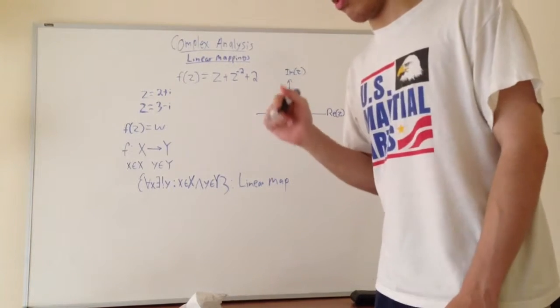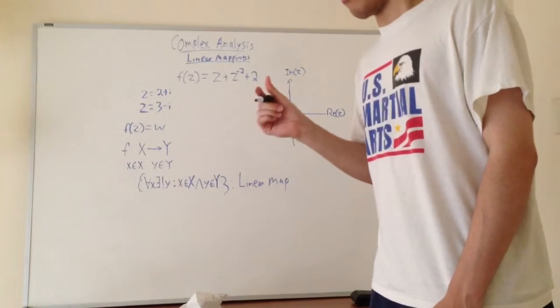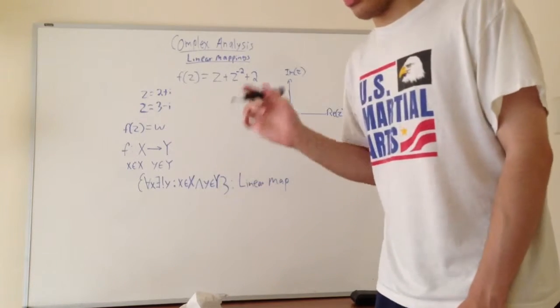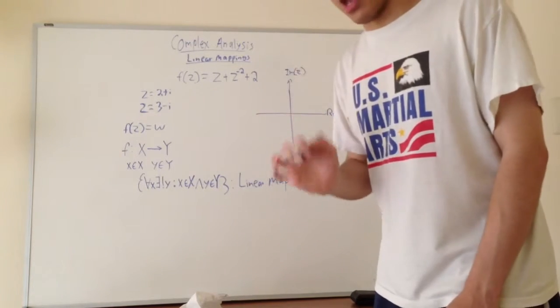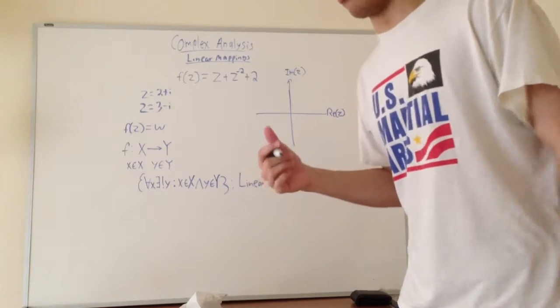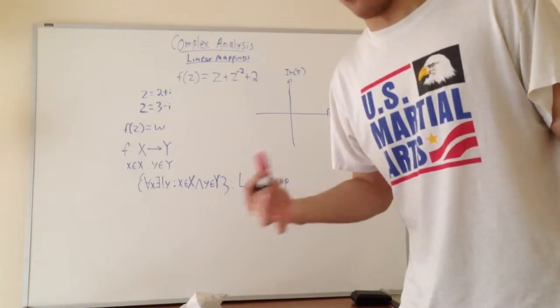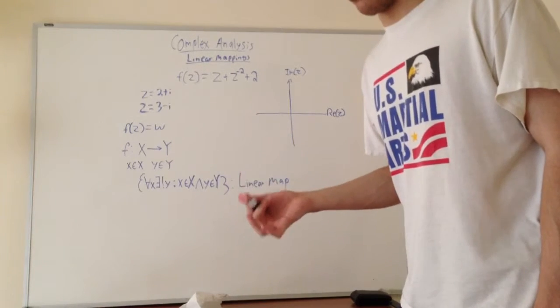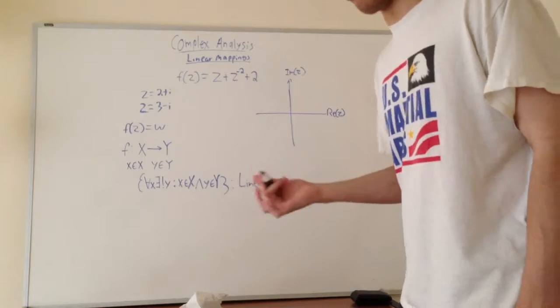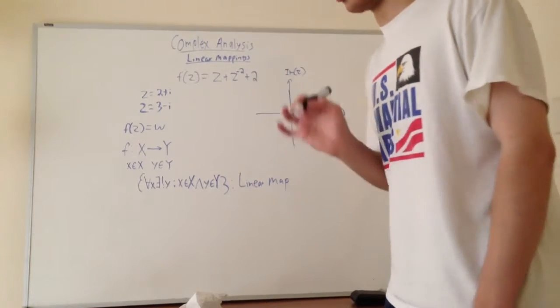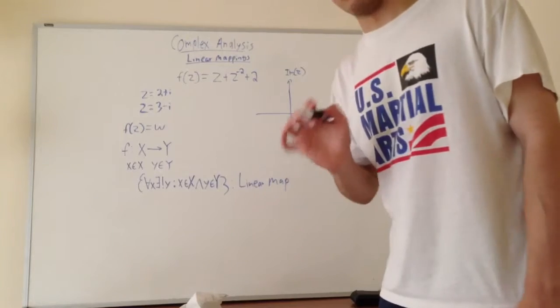If you think about it for real functions, I'm going to use 1 over x as an example. For every x you give me, I can give you exactly one y that defines that function. So if you give me x equals 2, y is going to be 1 half. If you give me x equals 4, then y is going to be equal to 1 fourth, and so on. For every x, there's exactly one y. The function is one to one. That essentially is what a linear map is.